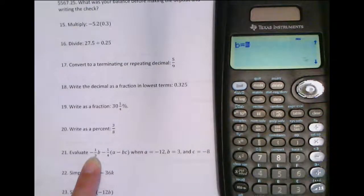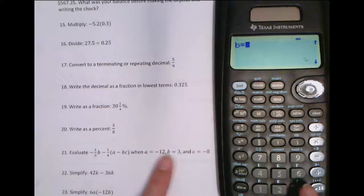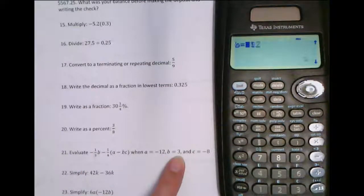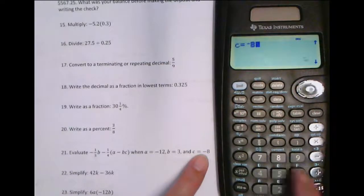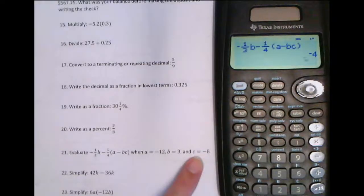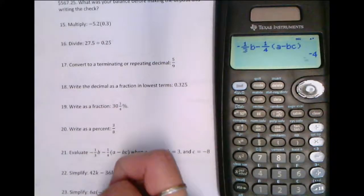If I press enter, it asks me what is b because it's the first variable. I can see I want b to be 3. So that's already in there. I've obviously used this calculator for this problem before. I want a to be negative 12, and I want my c to be negative 8. And it's going to tell me that this whole thing is just equal to negative 4.